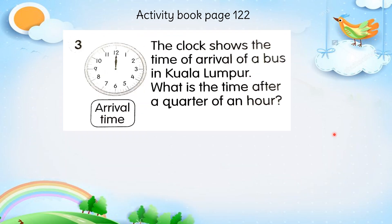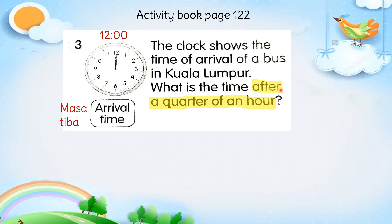Number 3. Muka jam ini menunjukkan arrival time — arrival time maksudnya masa dia tiba. Sebuah bus sampai di Kuala Lumpur pada pukul 12 — 12 o'clock. The minute hand and hour hand is showing at 12, so it is 12 o'clock. What is the time after a quarter of an hour? After means selepas. Selepas a quarter — a quarter means 15 minutes. 15 minutes ialah a quarter — selepas 15 minutes, pukul berapa?